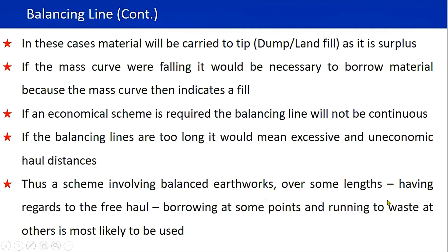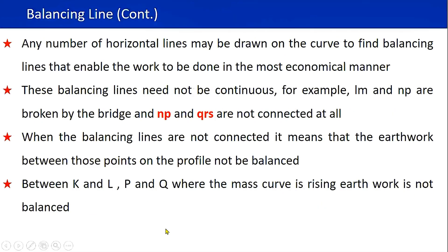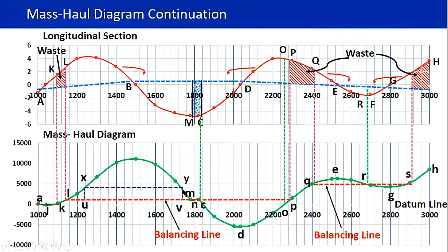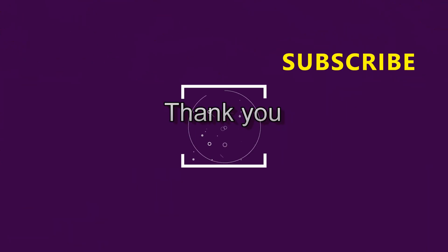There is something called freehaul — the distance over which you transport the soil freely. In some projects the freehaul distance is about 500 meters, in others about one kilometer. In this particular project it is about 500 meters — from chainage 1240 to 1740. The earthwork within this freehaul distance is transported freely, and this volume is known as the freehaul volume. Beyond that range it is known as overhaul — you will be charged for transporting beyond the freehaul distance. That is the end of the explanation of the mass haul diagram. Thank you very much for watching, don't forget to subscribe and click the bell button.